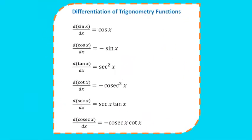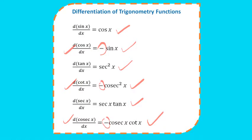Now some standard differentiation formulas for trigonometric functions: differentiation of sin x is cos x; differentiation of cos x is -sin x; differentiation of tan x is sec²x; differentiation of cot x is -cosec²x; differentiation of sec x is sec x·tan x; differentiation of cosec x is -cosec x·cot x. Note the pattern: whenever the function starts with 'c' — cos, cot, or cosec — the differentiation is negative.